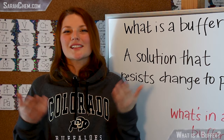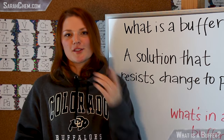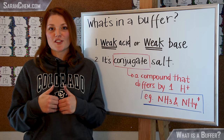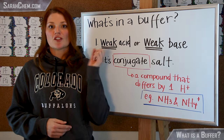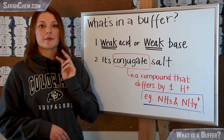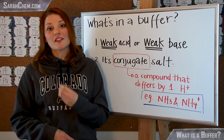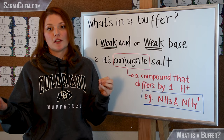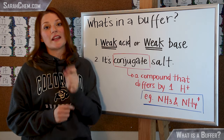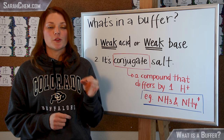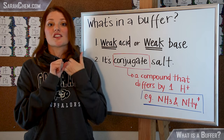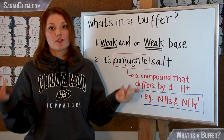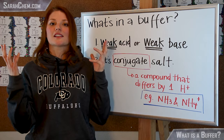So the next question is: what's in a buffer? There are essentially two criteria that have to be met. The first thing is you have to have a weak acid or a weak base in solution. The point here is it's weak — you cannot make a buffer with something like HCl because that is a strong acid. It would have to be something like HNO2, nitrous acid, because that's a weak acid.